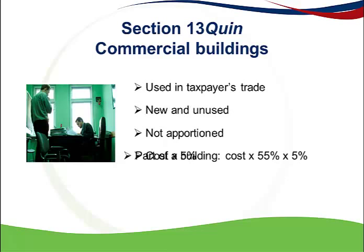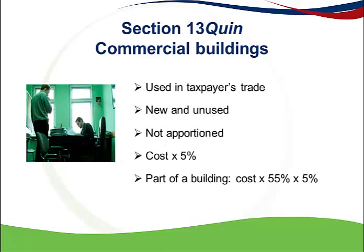Take note that if only part of a new building is purchased — for example, only the second floor of a five-storey building — then the cost price of that part of the building must be multiplied by 55% first before the 5% allowance is applied.